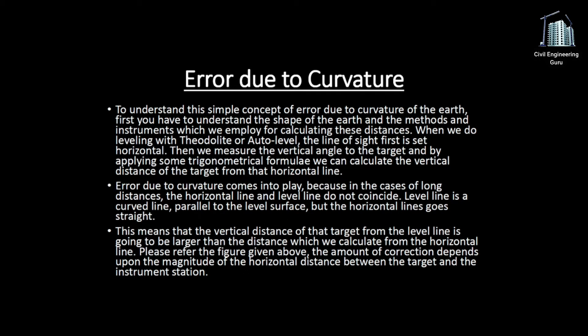This means that the vertical distance of the target from the level line is going to be larger than the distance calculated from the horizontal line. Please refer to the figure shown. The amount of correction depends upon the magnitude of the horizontal distance between the target and the instrument station.